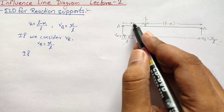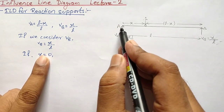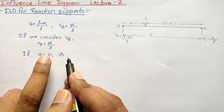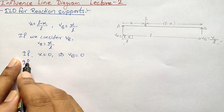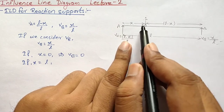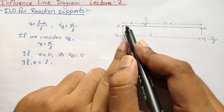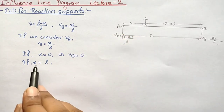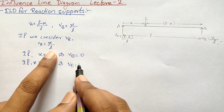If our unit load is at A, then x equals 0, and putting x equals 0 into the equation gives VB equals 0. Similarly, if x equals L — meaning the unit load has reached support B — then VB equals L upon L, which equals 1. So at support A the ordinate is 0 and at support B the ordinate is 1.